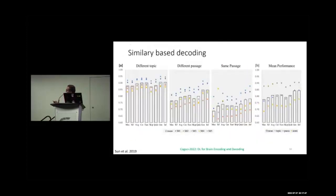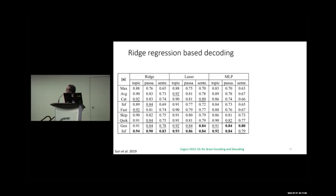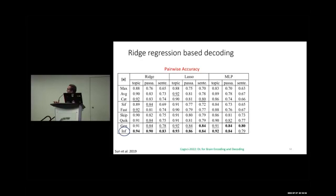These are the similarity-based decoding results across all three types and all five subjects. For regression-based decoding, three models were tried: ridge, lasso (linear models), and MLP (non-linear). Among all models, InferSent consistently performs best across all three subtopics for both ridge/lasso and MLP. For rank accuracy also, InferSent performs better than other distributed sentence representations.